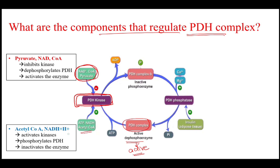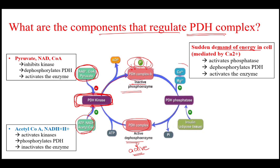Acetyl-CoA, NADH, and ADP, when present in high amounts in the cell, stimulate PDH kinase. When PDH kinase is stimulated, it adds more phosphate groups to the PDH complex, and phosphorylation of the enzyme makes it inactive, stopping the reaction. When there is a sudden demand for energy in the cell — mediated by calcium and magnesium ions — these activate phosphatase. Phosphatase catalyzes the removal of the phosphate group; when dephosphorylated, the enzyme becomes active, pyruvate is converted to acetyl-CoA, acetyl-CoA enters the citric acid cycle, and the sudden energy demand is met.